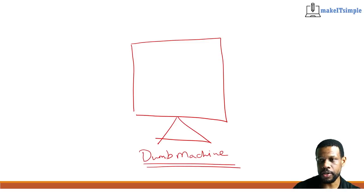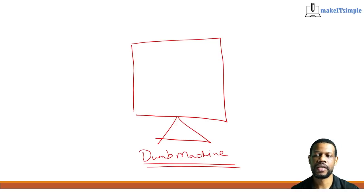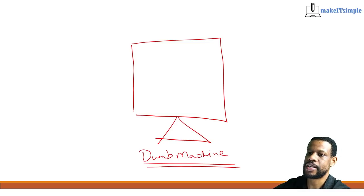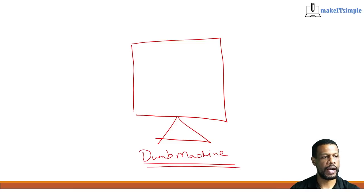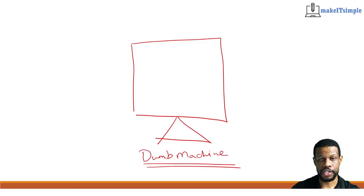As much as you want to talk about computers being smart — AI, technology, all that cool stuff — a computer is a dumb machine. Literally what the computer is going to do is follow instructions. When following instructions, the computer is trying its best to follow them properly, but that doesn't work out well unless we give the instructions properly.